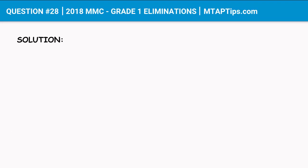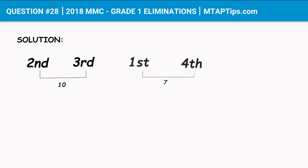Let's analyze the problem. For the second and third monkeys, they ate a total of 10 bananas, which means only seven bananas are left for the first and fourth monkey. For the second and third monkey, they could have eaten nine and one, eight and two, seven and three, six and four, or five and five bananas, but we're not sure yet.